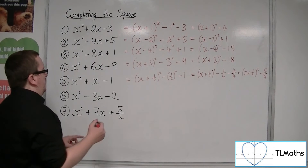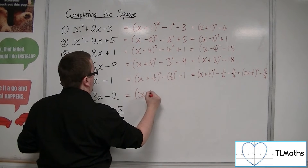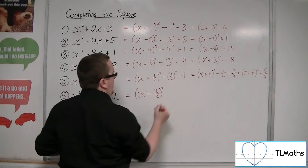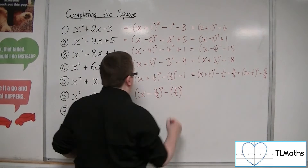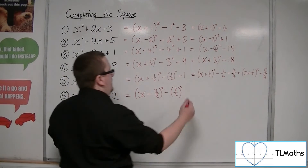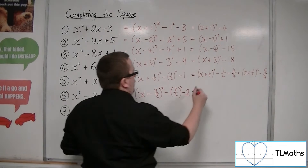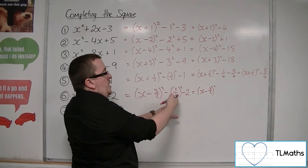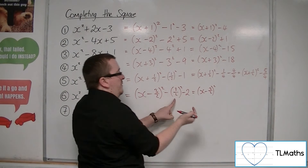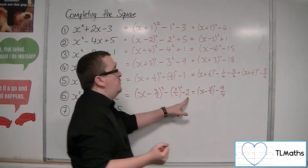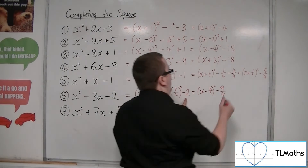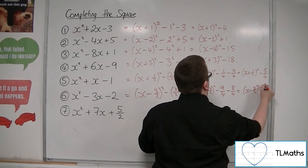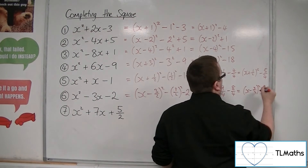Number 6: this time we've got x minus half of minus 3, so minus 3 halves, squared. We take away 3 halves squared, and we've got an extra minus 2 on the end. So we've got x minus 3 halves squared. That's 9 over 4, because you square the top and bottom of the fraction, so minus 9 quarters. Writing the minus 2 in terms of quarters gives minus 8 quarters. So the answer is x minus 3 halves squared, minus 9 quarters, take away 8 quarters, giving minus 17 quarters.